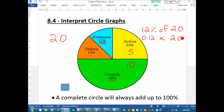So 12%, we actually convert it to a decimal. So this is 0.12 times 20. Does this ring a bell? So when we multiply those together, we get 2.4. So 2.4 individuals liked romance.